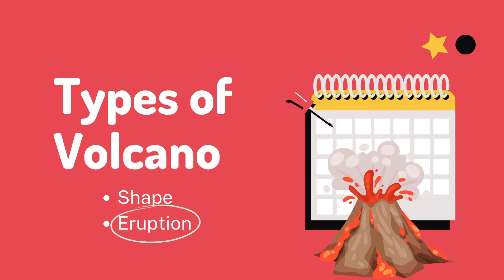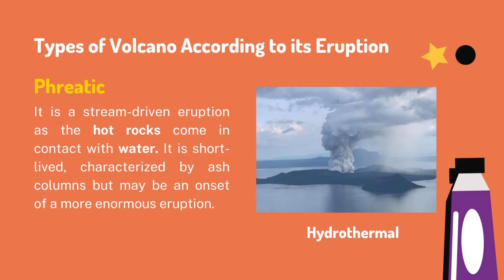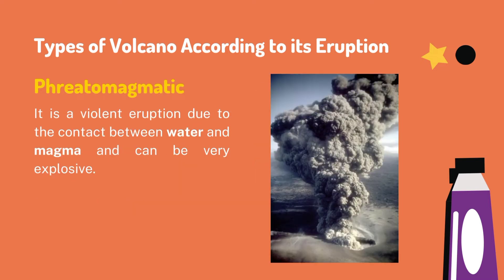Now, let us go to the different types of volcanic eruption — the types of volcanoes according to their eruption. The first one is pyroclastic. It is a steam-driven eruption where hot rocks come in contact with water. It is short-lived, characterized by ash columns, but may be the onset of a more enormous eruption. It is also known as hydrothermal. In fact, the Taal Volcano had a pyroclastic eruption last January 12, 2020.